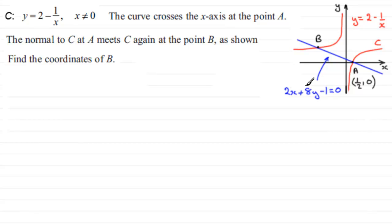And in the previous part we found out that the equation of the normal was 2x plus 8y minus 1 equals 0. And the coordinates of A was a half 0. So how are we going to go about this kind of problem? Find the coordinates of B.